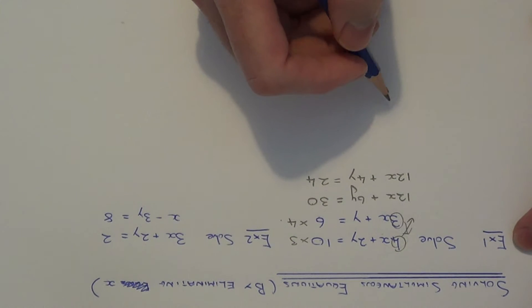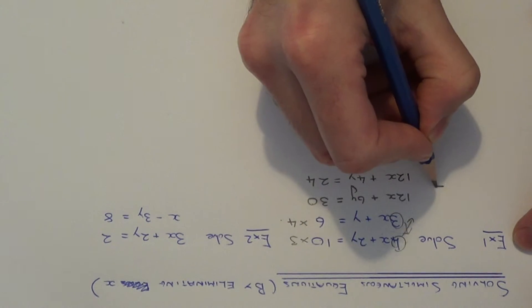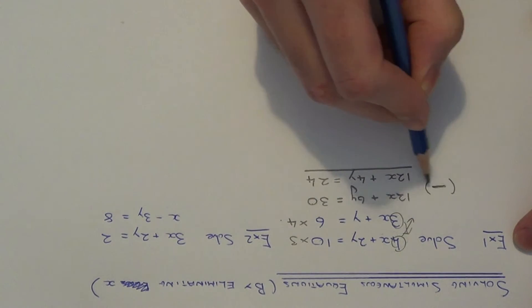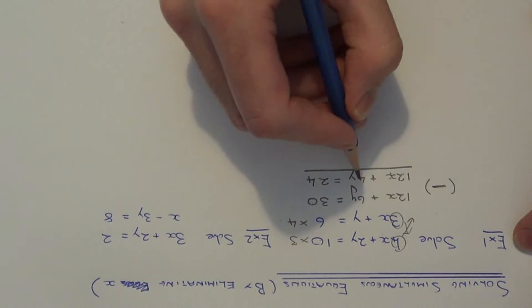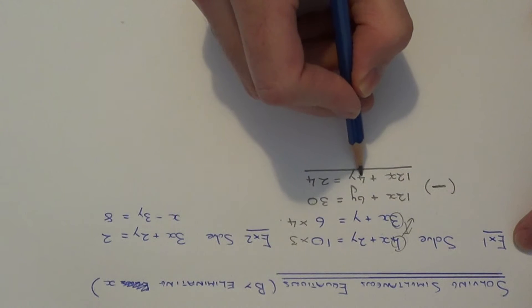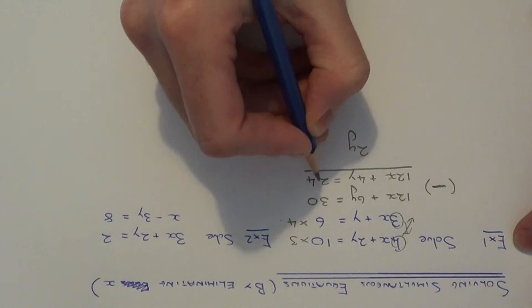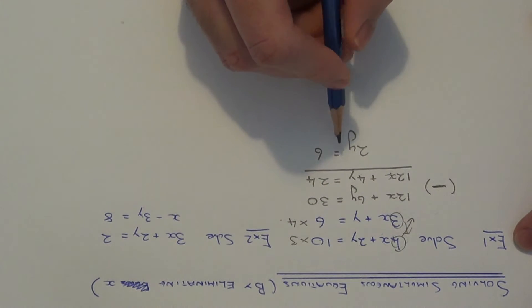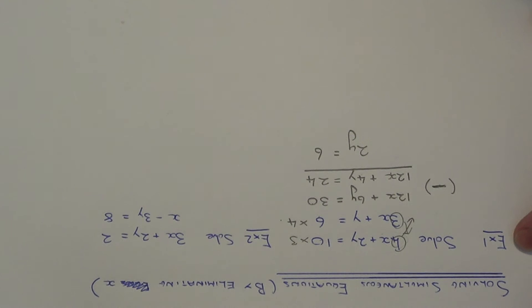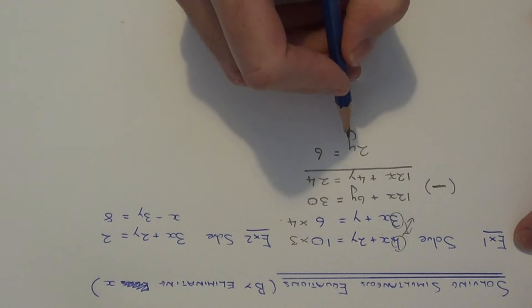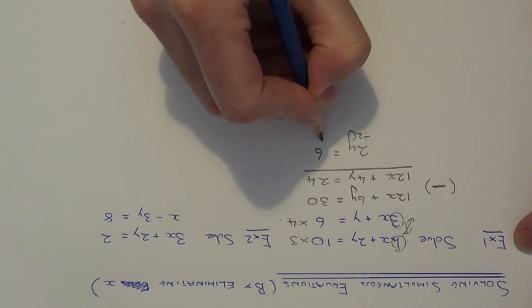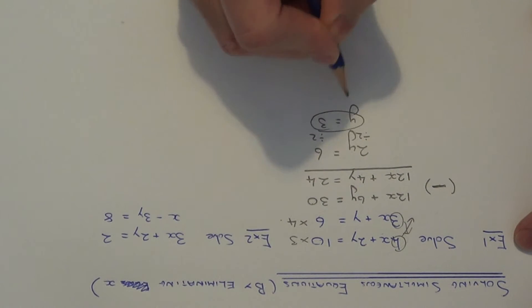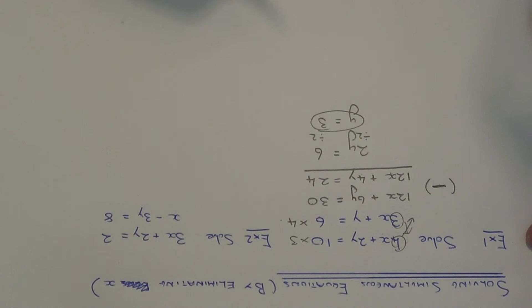So this means we can eliminate these x values by taking the equations away. So 12x take away 12x gives 0x, so don't bother writing this down. 6y take away 4y is 2y and 30 take away 24 is 6. So we've ended up with the equation 2y equals 6. All you have to do next is solve this simple equation by dividing both sides by 2. So this will give y is equal to 3. So we've worked out our y solution.